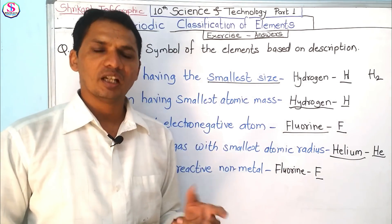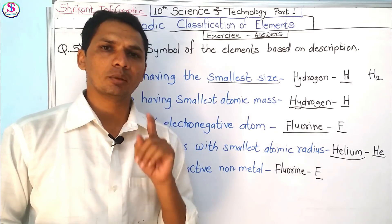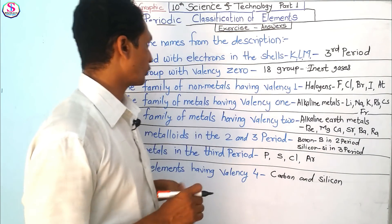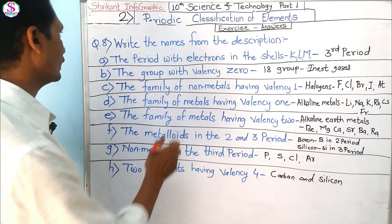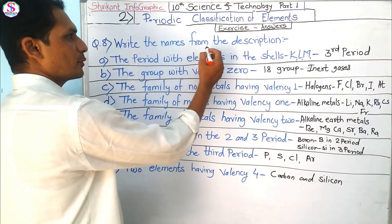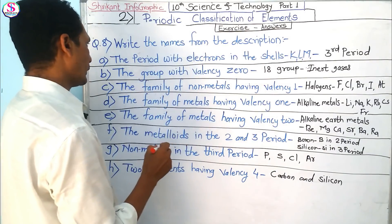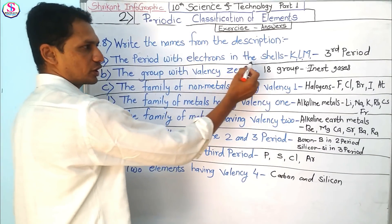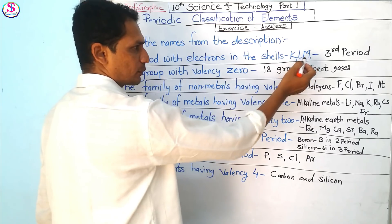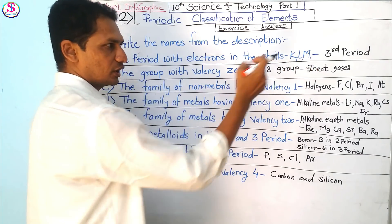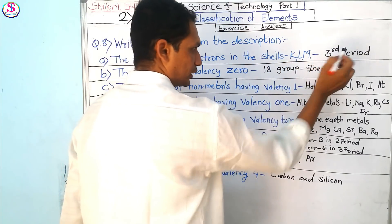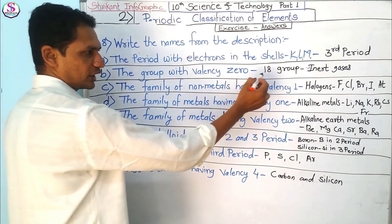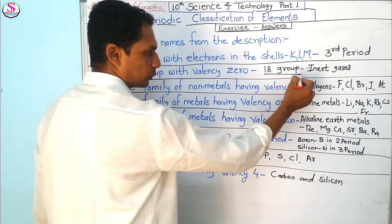Questions 6 and 7 were already discussed in previous videos. Now for Question 8 — the last question of the chapter — write the names from the description. The period with electrons in shells K, L, M has three shells, so it is the third period. The group with valence 0 is Group 18, where all the inert gases are found.